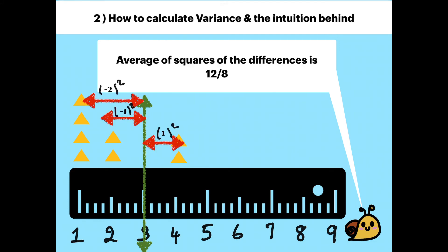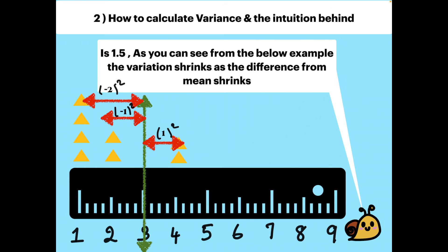Let's now calculate the differences and square them all up to get the average. By adding all the squares of differences, we get 12, and dividing it by the total count gives us 1.5. As you can see from the below example, the variation shrinks as the difference from the mean shrinks.